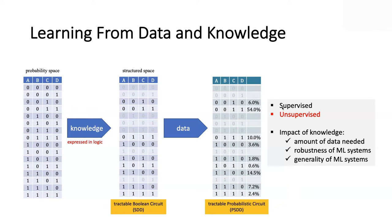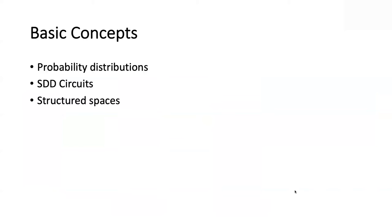The techniques I'll mention today have been used in both supervised and unsupervised learning. We'll be talking about unsupervised learning today, which is generally viewed as more resembling what humans do. A lot of what happens in AI today is supervised — that's the use of neural networks. We may talk about that in future lectures. So I'd like to first review probability distributions, then review SDD circuits in a couple of slides, then discuss the notion of a structured space with examples, and finally introduce PSDDs and how we can learn from data and knowledge.